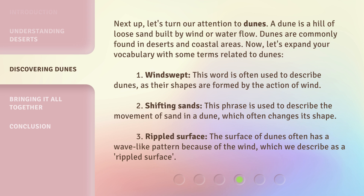1. Windswept — this word is often used to describe dunes, as their shapes are formed by the action of wind. 2. Shifting sands — this phrase is used to describe the movement of sand in a dune, which often changes its shape. 3. Rippled surface — the surface of dunes often has a wave-like pattern because of the wind, which we describe as a rippled surface.